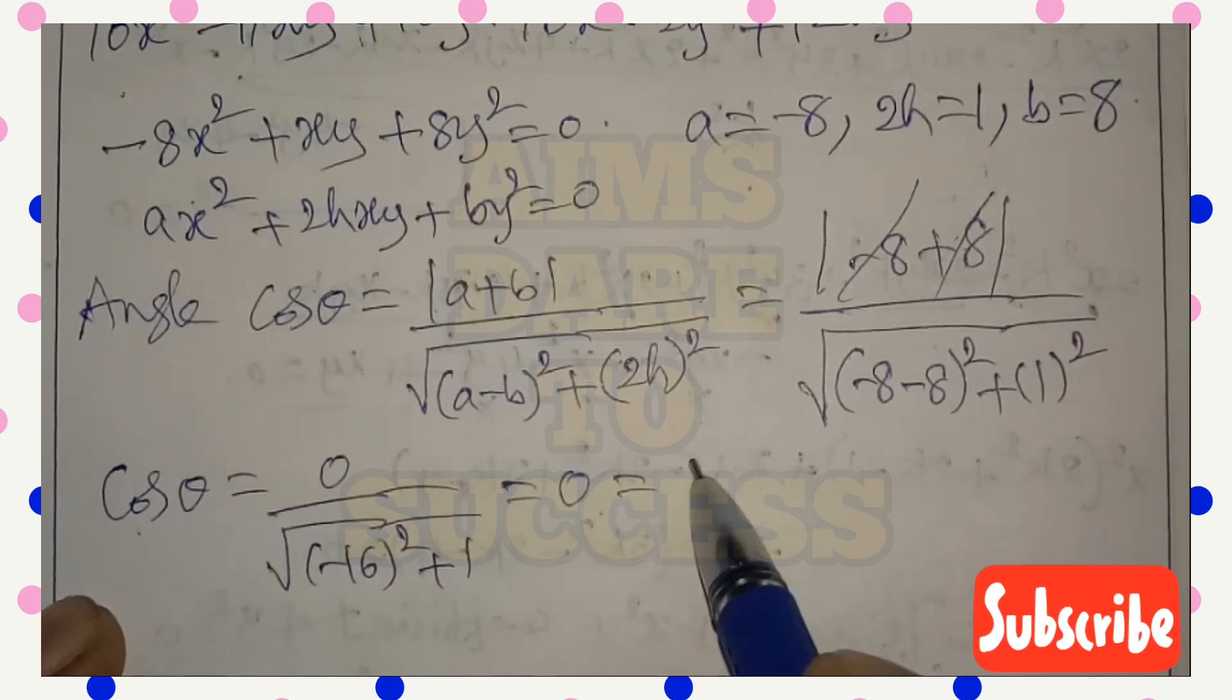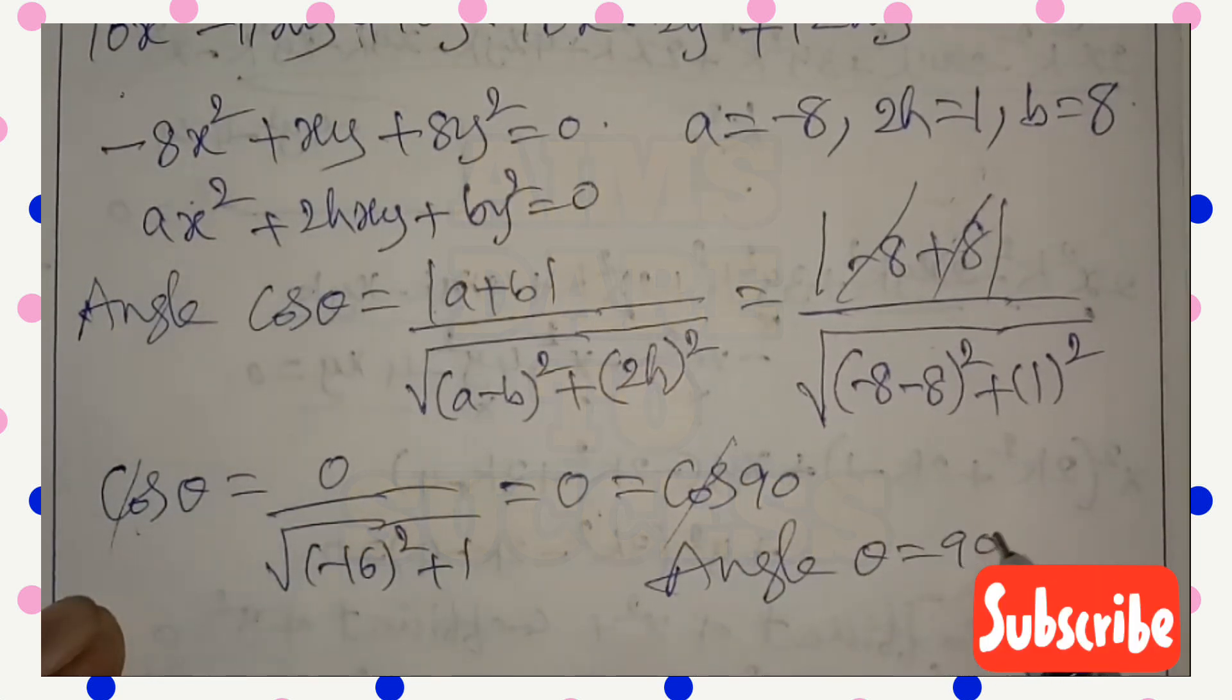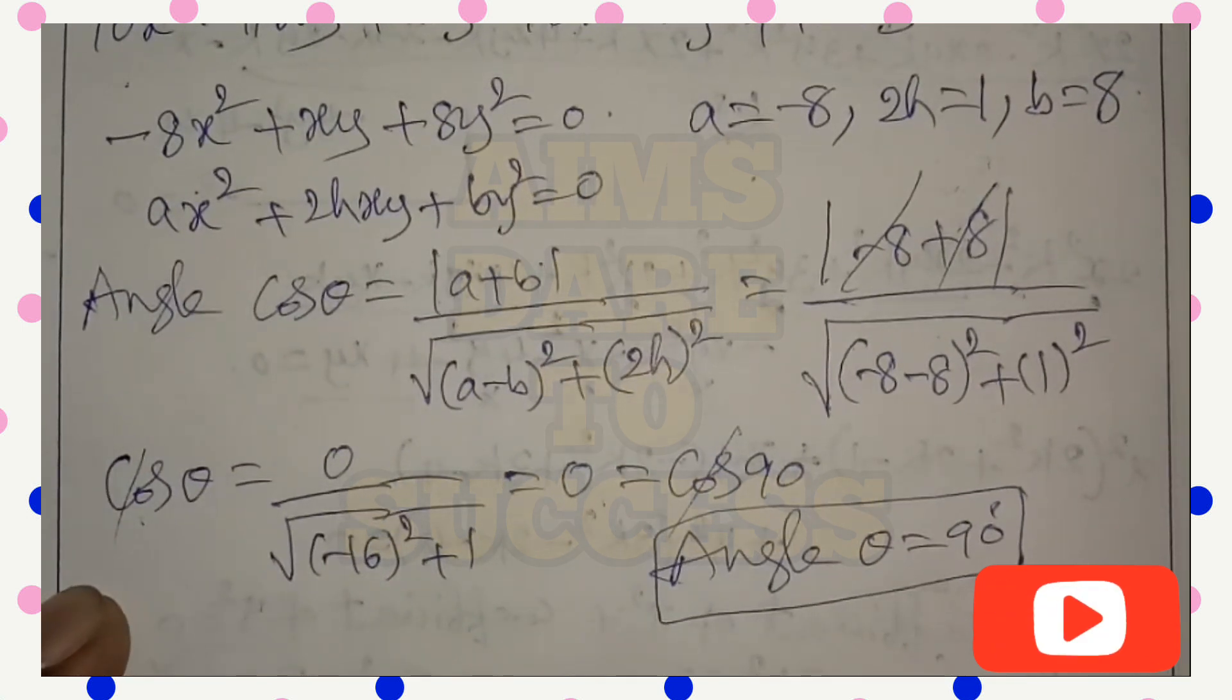So in terms of cos, 0 value is cos 90°. Left side, right side, cos cos get cancelled. Therefore angle θ = 90 degrees. Please subscribe our channel.